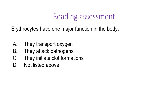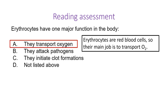Erythrocytes have one major function. Do they transport oxygen, attack pathogens, or initiate clot formation? Erythrocytes are commonly called red blood cells or RBCs — you should know both terms. Their primary function is to transport oxygen. They are useful in forming clots but never attack pathogens. So they transport oxygen around the organism.